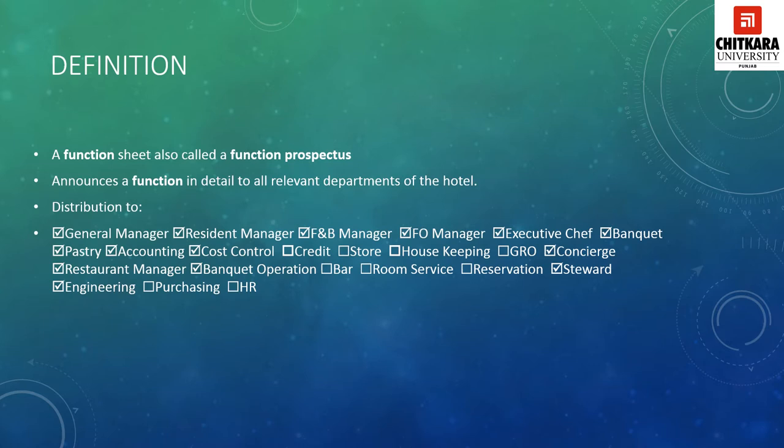The function prospectus is sent to: the general manager, resident manager, F&B manager, front office manager, executive chef, banquet department head, pastry or patisserie, accounting department, cost control department, credit store, housekeeping, GRO, concierge, restaurant manager, banquet operations, bar, room service, reservation, steward (kitchen stewarding department), engineering, and purchase. Wherever the relevant department should be aware, it is sent so that they can help fulfill the requirements of the host for that particular function.